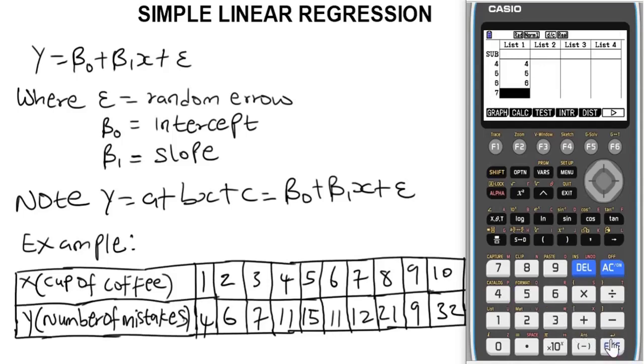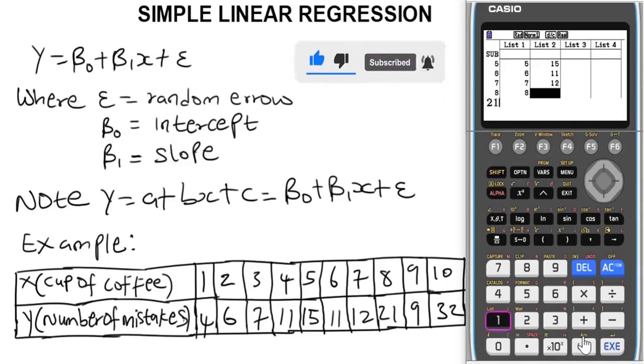Five, six, seven, eight, nine, and ten. Whereas for the y values we have them to be four, six, seven, eleven, fifteen, eleven, twelve, twenty-one, nine, and thirty-two.